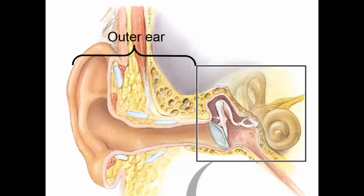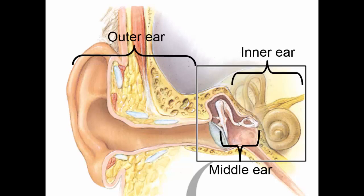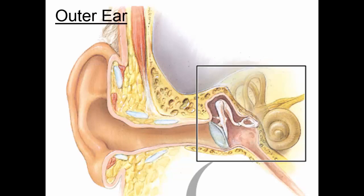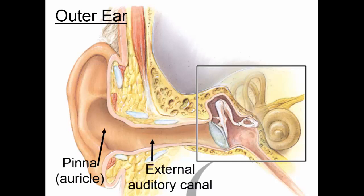The outer ear, the middle ear, and the inner ear are the three distinct regions of the ear. The outer ear is composed of the pinna or the auricle and the external auditory canal. The pinna collects sound and directs it down the external auditory canal.